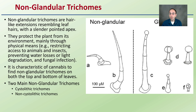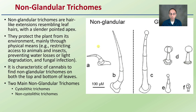We also have non-glandular trichomes. They are hair-like extensions resembling leaf hairs with a slender, pointed apex. They protect the plant from its environment mainly through physical means — restricting access to animals and insects, preventing water loss or light degradation, and preventing fungal infection. It is characteristic of cannabis to find non-glandular trichomes on both the top and bottom of the leaves, and there are two main types found on cannabis plants.